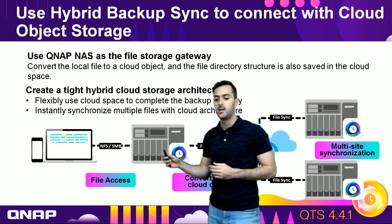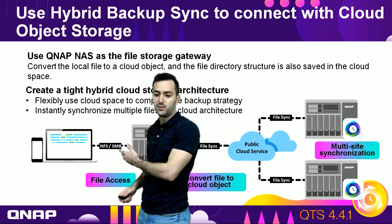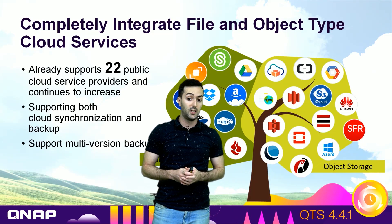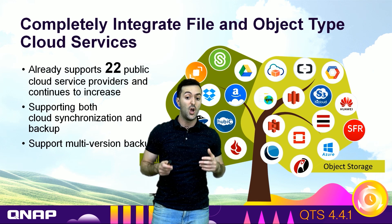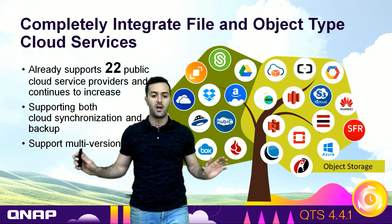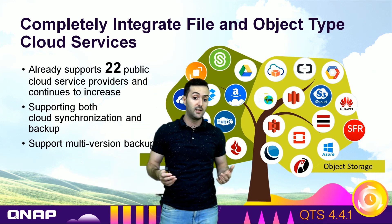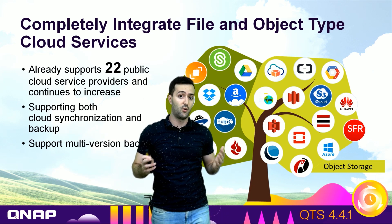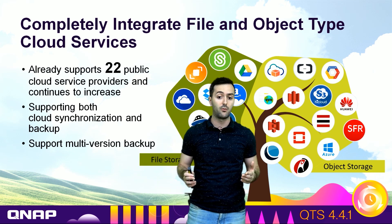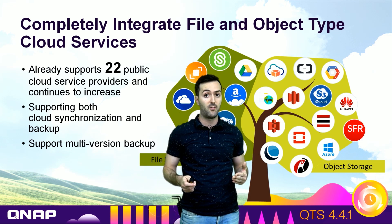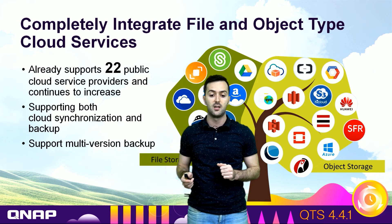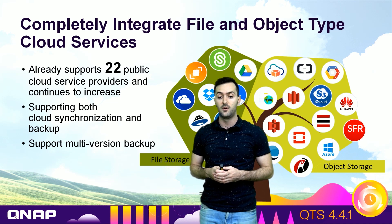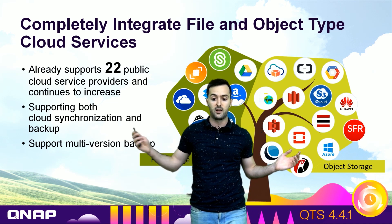You can use NFS or Samba to access files, convert them to cloud objects, and move them to public cloud services with multi-site synchronization. As mentioned, Hybrid Backup Sync 3.0 completely integrates file and object type cloud services. Currently it supports 22 public cloud service providers, and that number will keep increasing — supporting both synchronization, backup, multi-version backup, and both object and file storage.